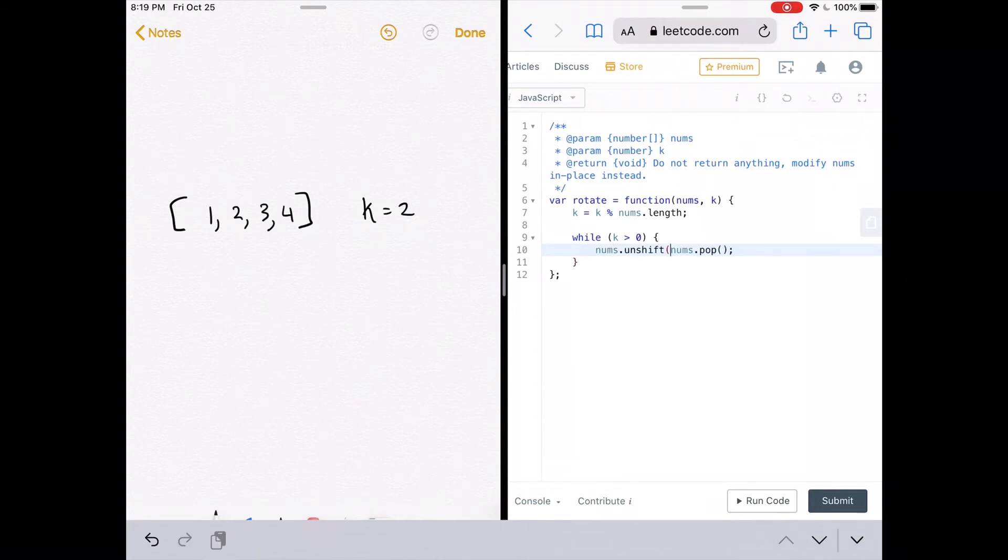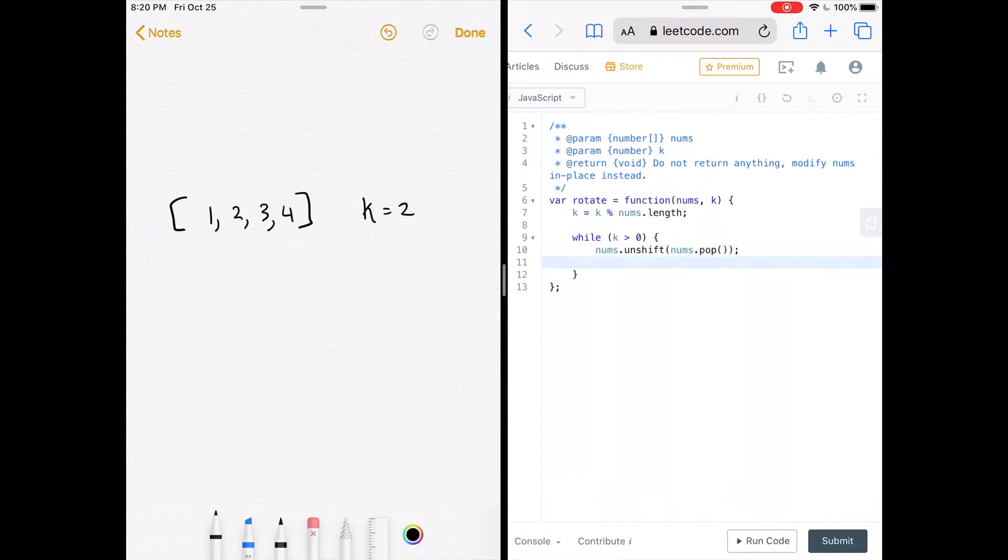So since pop returns the element that was removed, we can just wrap that in nums.unshift. Unshift in JavaScript just adds the element to the front of the array. So you pop the element and you immediately move it to the front of the array.